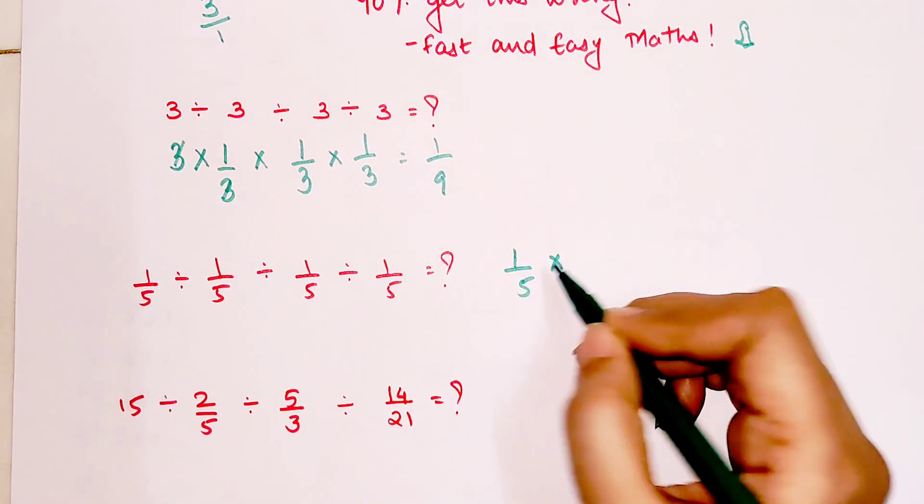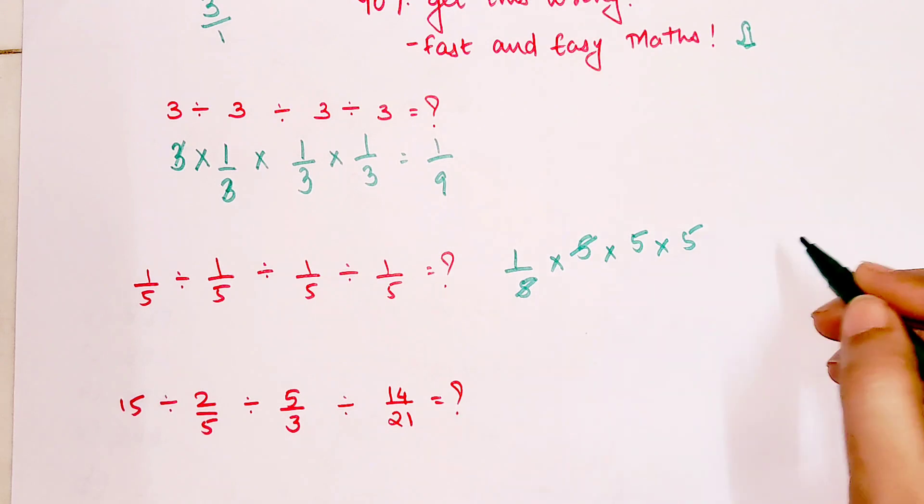So now for this one, we will keep 1 upon 5, the first 1 upon 5 as it is. Now please understand the reciprocal of this will be what? 5 upon 1. So any number divided by 1, we just write the number itself. Similarly, here also 5, here also 5. So this 5 and this 5 is getting cancelled. So your final answer is 25.